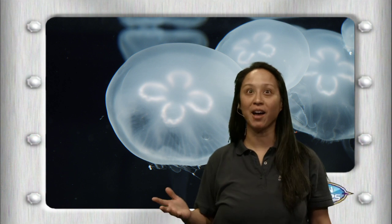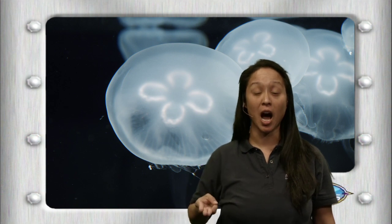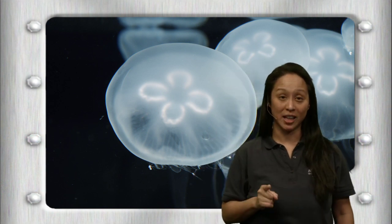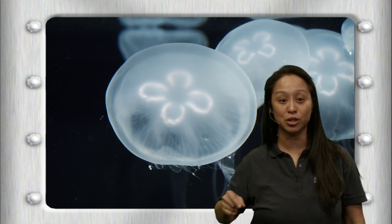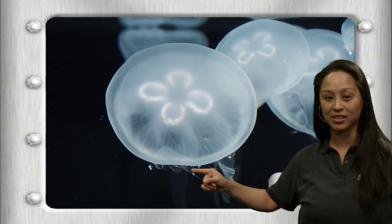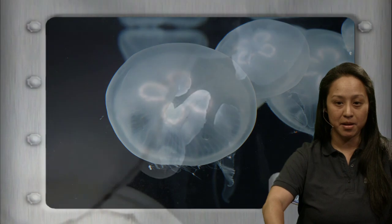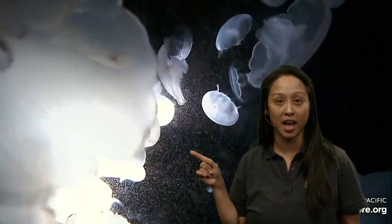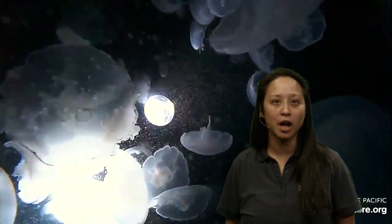Four stomachs! The moon jelly has four stomachs. Can you imagine having four stomachs? In my first stomach I would put pizza, second a peanut butter jelly sandwich, third strawberries, and fourth ice cream. But jellies eat plankton - tiny things that drift in the ocean. A jelly has stingers all the way around it, and as it runs into its food it stings and sweeps the food into one of its four stomachs. This is a live look inside our jelly cam here at the Aquarium of the Pacific!